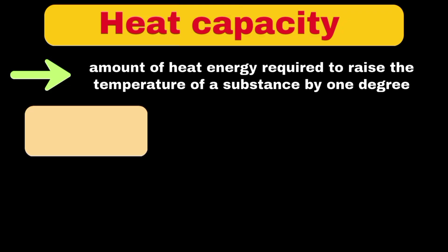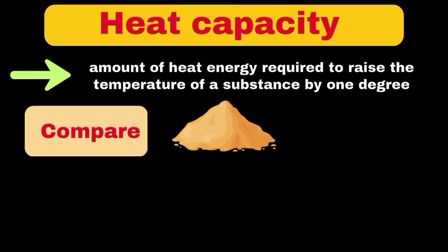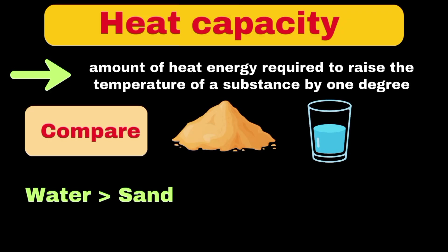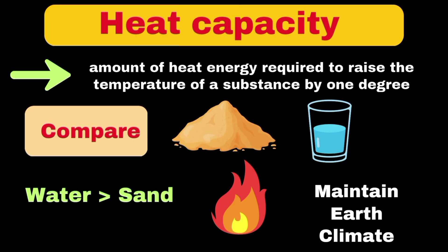To understand it deeply, let's compare water and sand at the beach. Water has a higher heat capacity than sand, which is why the sand gets hot quickly in the sun while the ocean stays relatively cool. This property of water is crucial for maintaining Earth's climate.